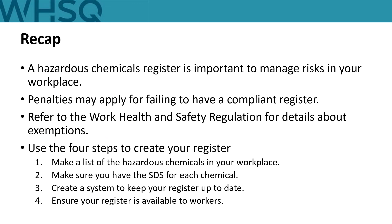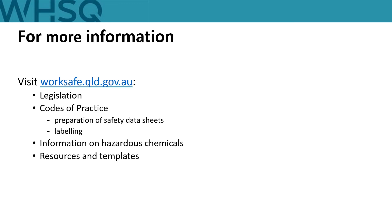I hope that after listening to this presentation you feel more confident to prepare your hazardous chemicals register. It's an important part of managing risk, and penalties may apply if you do not have a compliant register. Details about exemptions can be found in section 328 and schedule 19 of the Work Health and Safety Regulation. To get started: make a list of the hazardous chemicals in your workplace, make sure you have the current SDS for each chemical, create a system to keep your register up to date, and make sure the register is available to workers. Visit worksafe.qld.gov.au to find out more and to download an easy-to-use template.